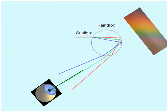A raindrop that's fallen a little farther is just at the right angle to have the green light come to your eye, and that raindrop looks green to you.